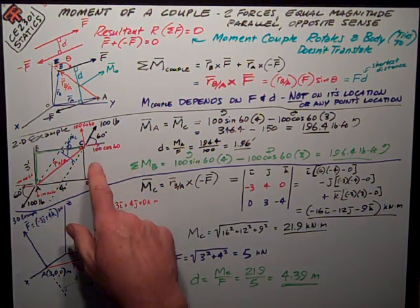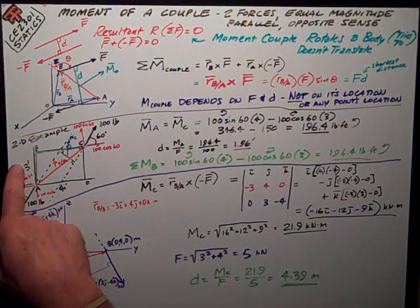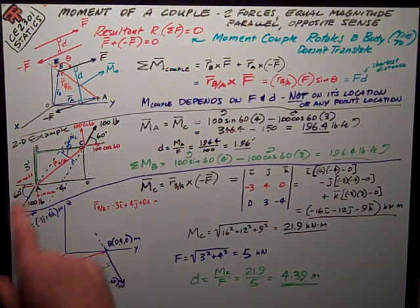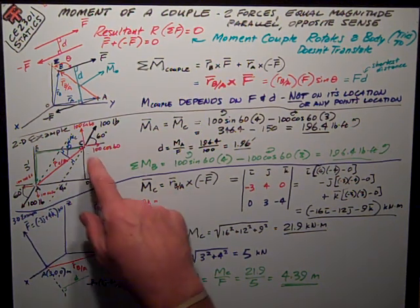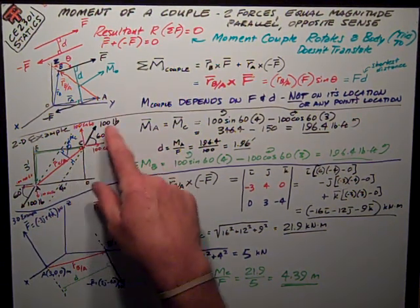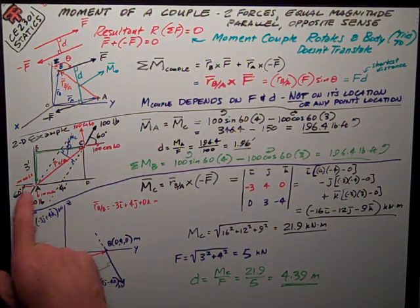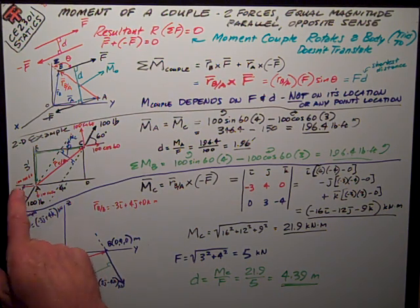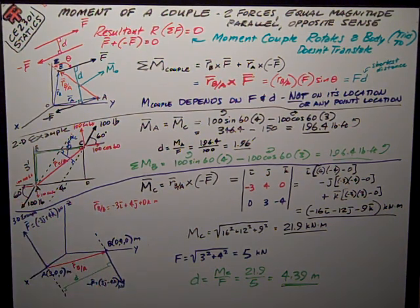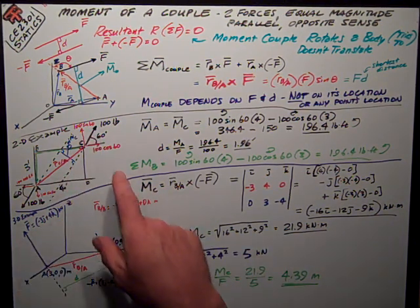Here's a 2D example. I have a plate shown in black, it's 3 feet tall and 4 feet wide, points A, B, C, D in each corner. At C, I've got a 100-pound force up and to the right, 60 degrees from the horizontal. Over here at point A, I have down and to the left a 100-pound force, 60 degrees from the horizontal. I want to know what the couple moment of those two forces is.